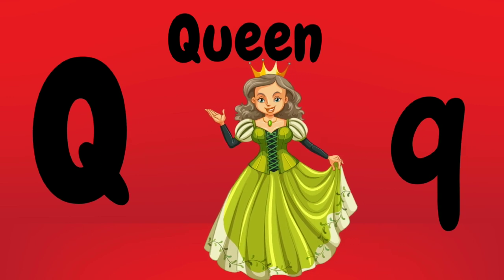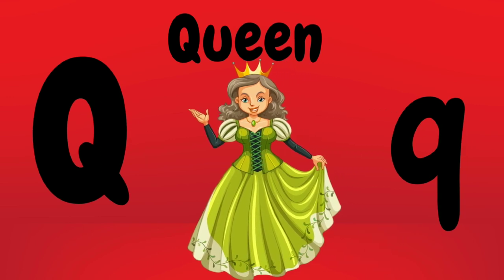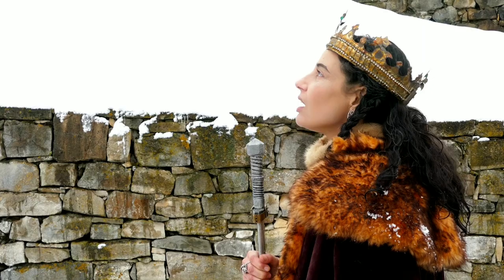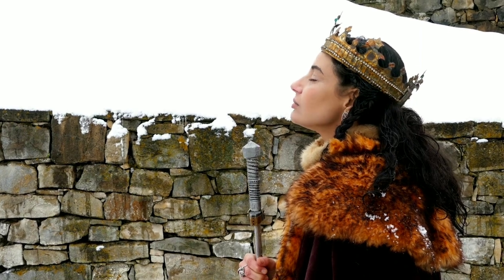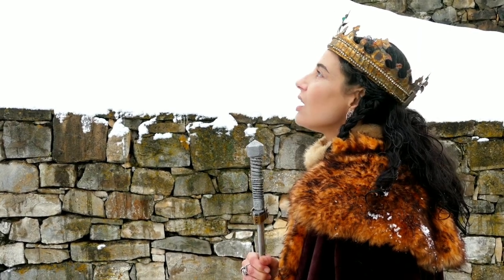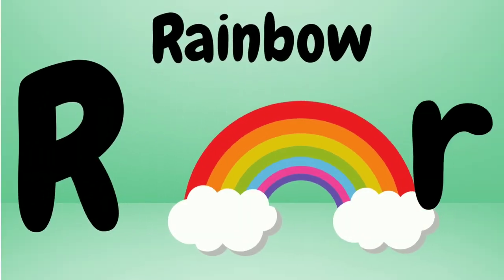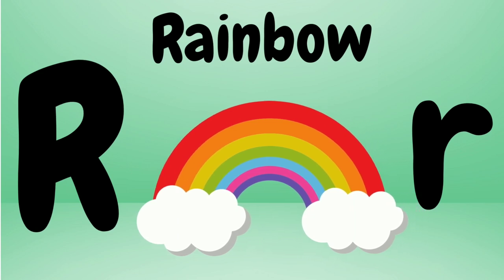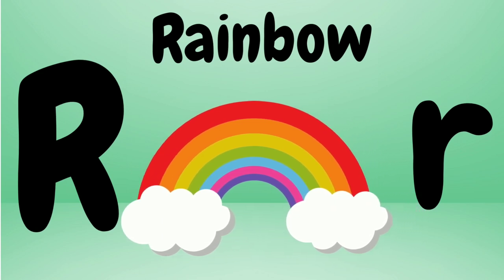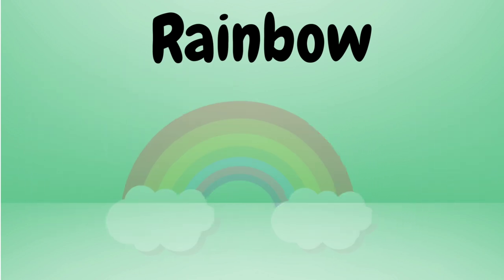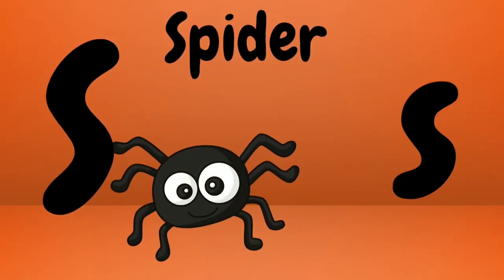Q is for queen. Queen, queen. This is a queen. Queen. R is for rainbow. Rainbow. Rainbow. This is a rainbow. Rainbow.